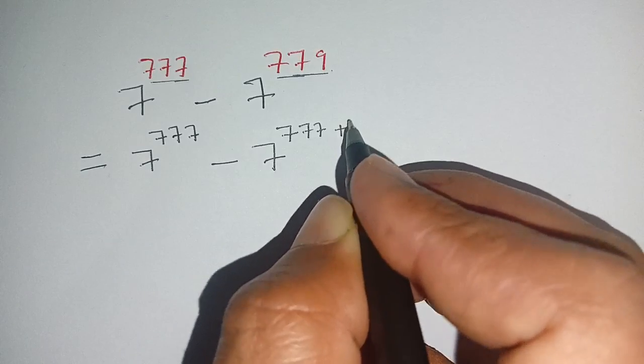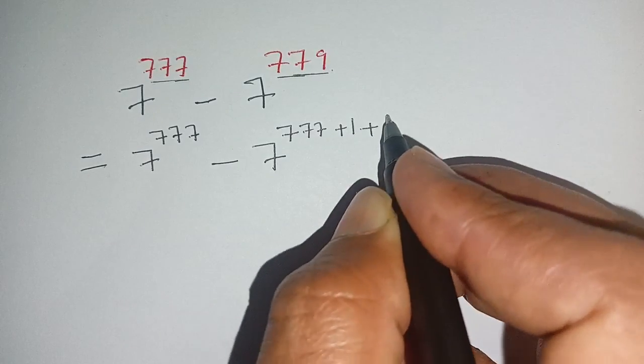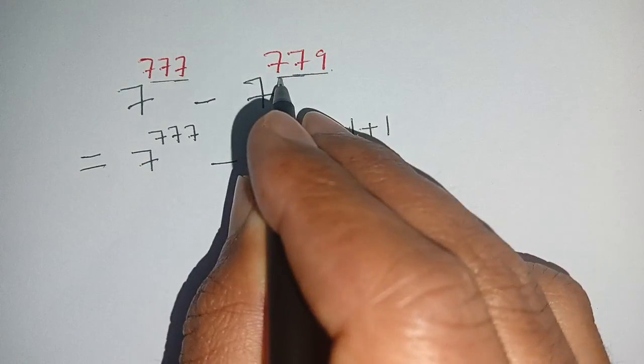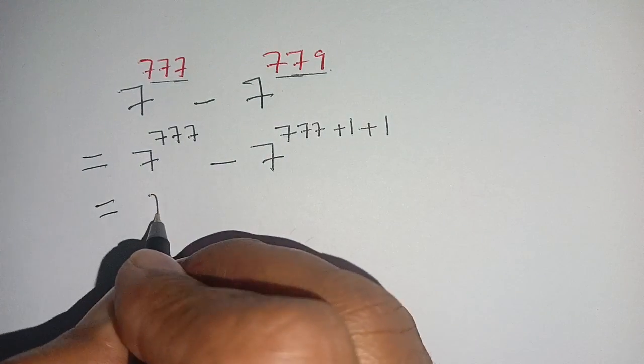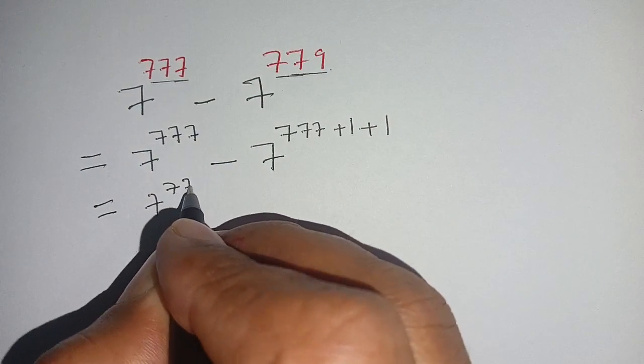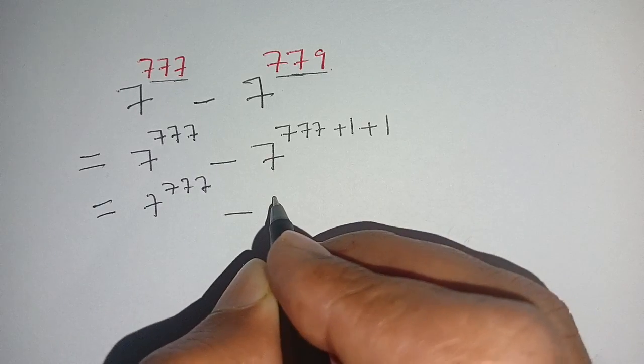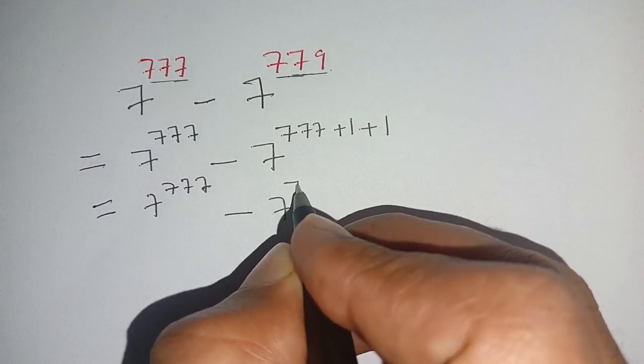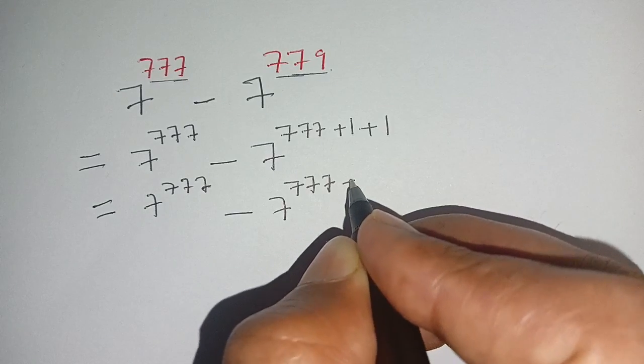779 equals 777 plus 2, so we can write this as 7^777 minus 7^(777+2).